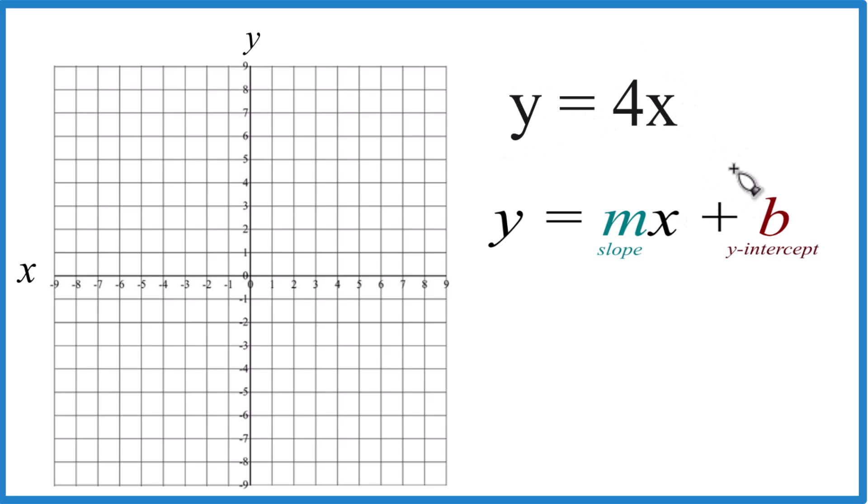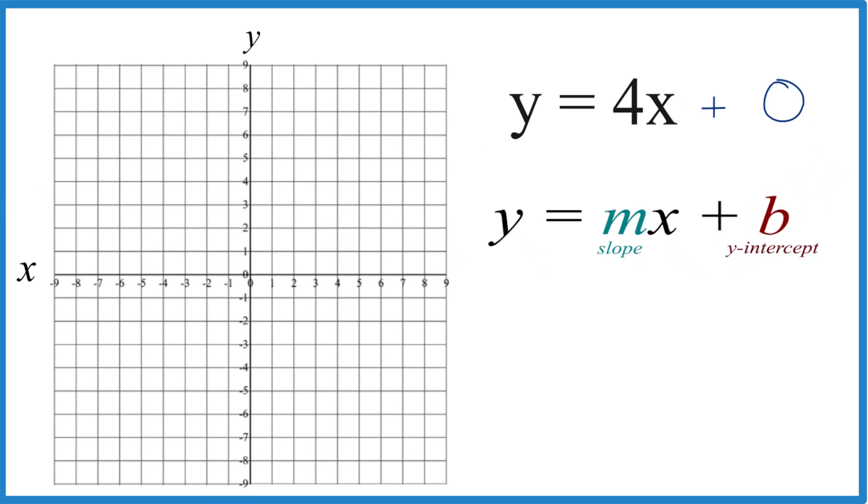So we have y equals 4x and there's nothing out here, so we don't have the y-intercept. So let's just write plus zero. Now we have the y-intercept and we can go over to the y-axis and write here zero. So that's where our line for y equals 4x is going to cross that y-axis.